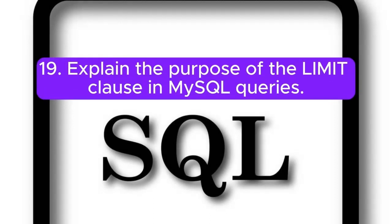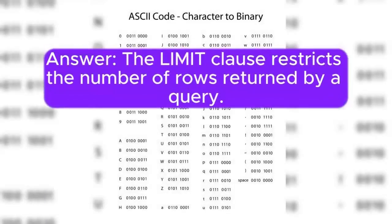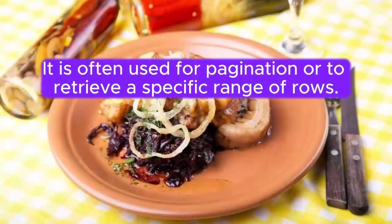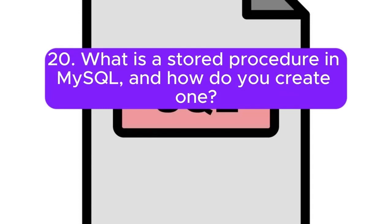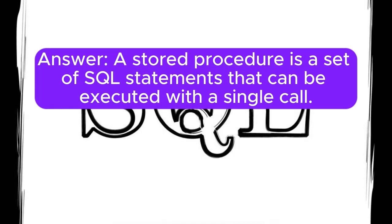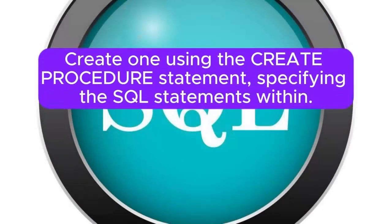Question 19: Explain the purpose of the LIMIT clause in MySQL queries. Answer: The LIMIT clause restricts the number of rows returned by a query. It is often used for pagination or to retrieve a specific range of rows. Question 20: What is a stored procedure in MySQL, and how do you create one? Answer: A stored procedure is a set of SQL statements that can be executed with a single call. Create one using the CREATE PROCEDURE statement, specifying the SQL statements within.